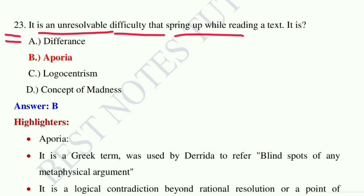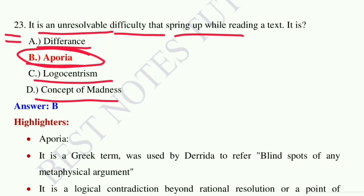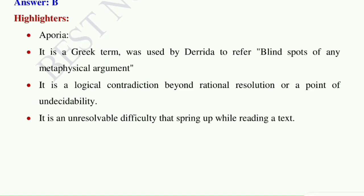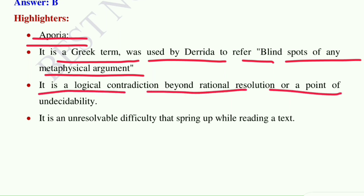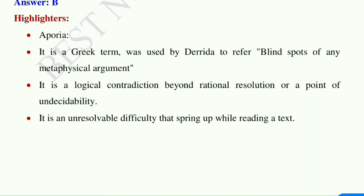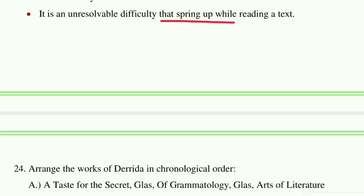Question number 23: it is an unresolvable difficulty that springs up while reading a text. It is: Option A: différance. Option B: aporia. Option C: logocentrism. Option D: concept of madness. The answer is aporia. Aporia is a Greek term used by Derrida to refer to blind spots of any metaphysical argument. It is a logical contradiction beyond rational resolution — a point of undecidability — an unresolvable difficulty that springs up while reading a text.